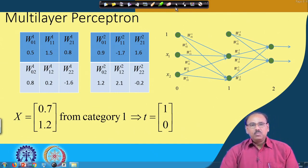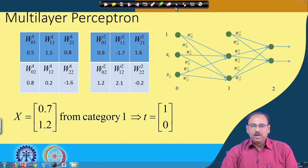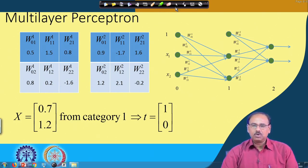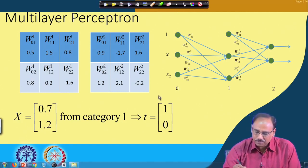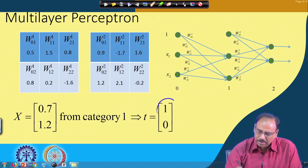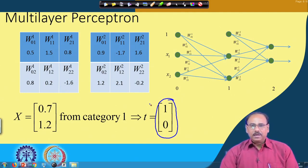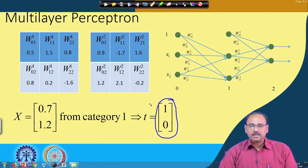I consider an input vector which is a two-dimensional vector with components 0.7 and 1.2. I assume this input vector belongs to category 1. As it belongs to category 1, the output of the first node in the output layer should be 1 and the output of the second node should be 0. So the target vector is [1, 0], and back propagation learning should adjust the weights so that the output is close to [1, 0].